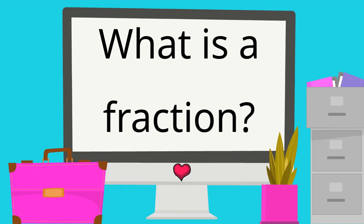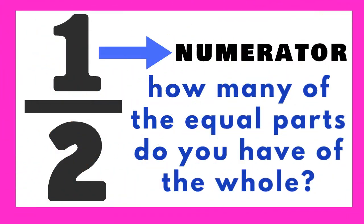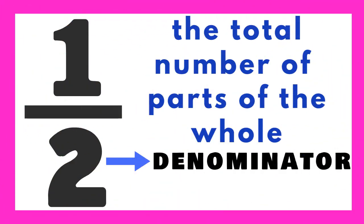What is a fraction? A fraction is part of a whole. The top number is called the numerator. It answers the question: how many of the equal parts do you have of the whole? The bottom number is called the denominator, which is the total number of parts of the whole.